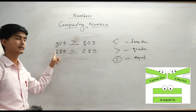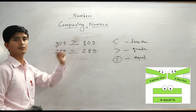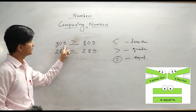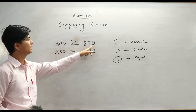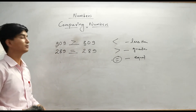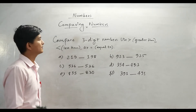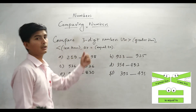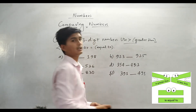So the method is: start by comparing the hundreds place, then compare the tens place, and finally compare the ones place. Here I have some questions for you — try them by yourself using these three symbols: greater than, less than, and equal to. You can use these symbols to compare any numbers.